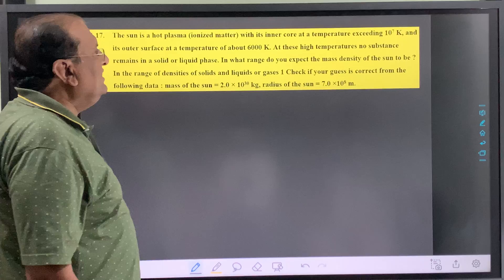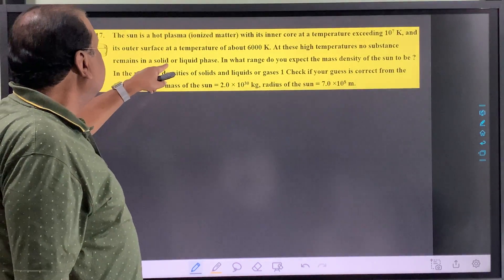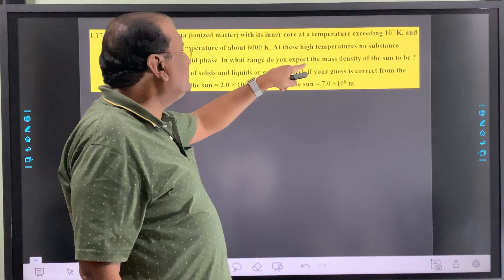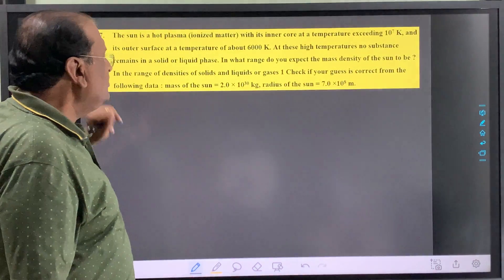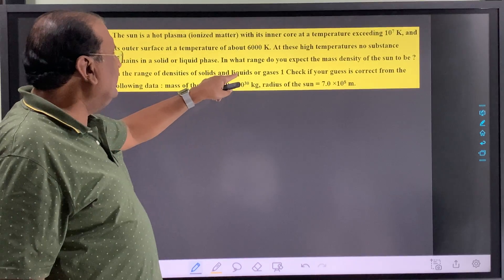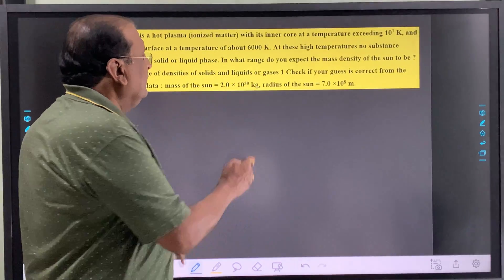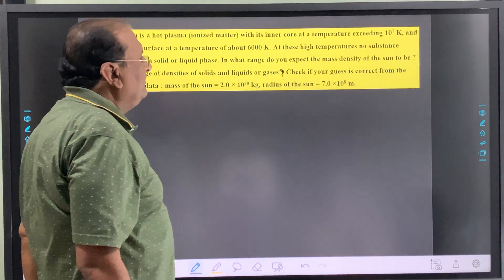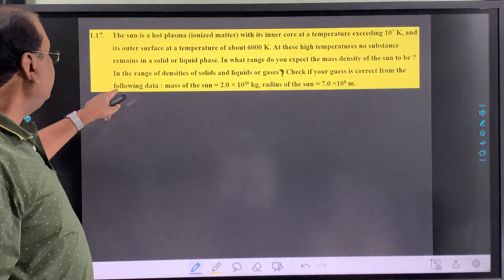At these high temperatures, no substance remains in a solid or liquid phase. In what range do you expect the mass density of the sun to be? In the range of densities of solids and liquids or gases? Now check if your guess is correct from the following data.